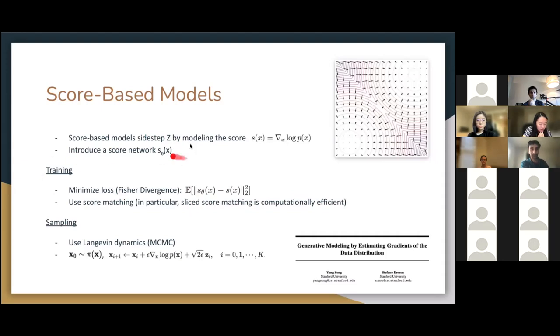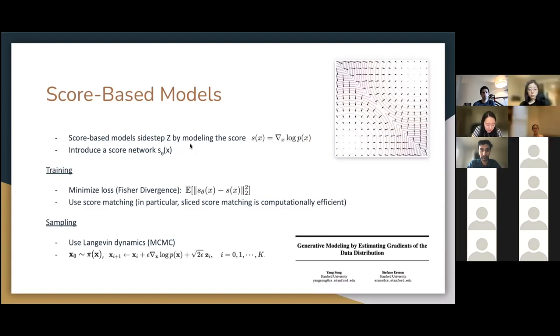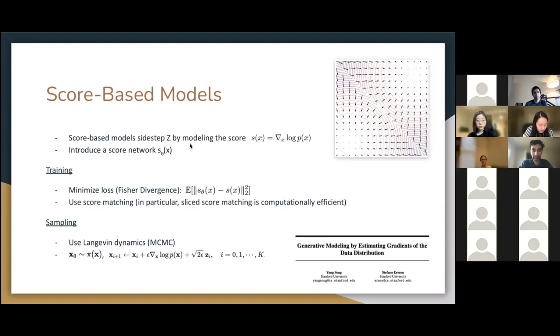Okay, so now that we can train our score network, we also want to sample from it. Now the question is, how do you sample from a score network? You only have access to the gradients of the probability, but not to the probabilities themselves. The solution is to use something called Langevin Dynamics, which is an MCMC-based method. Essentially, you initialize the Markov chain with some x0 sampled from a prior distribution.